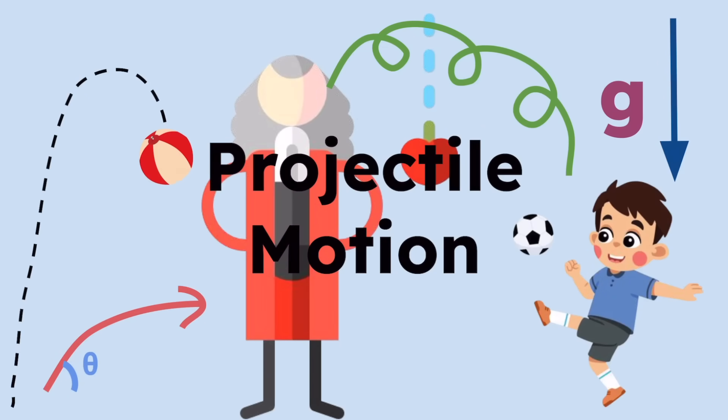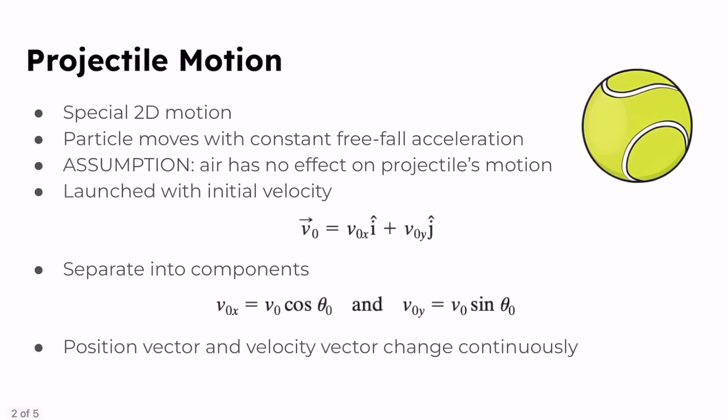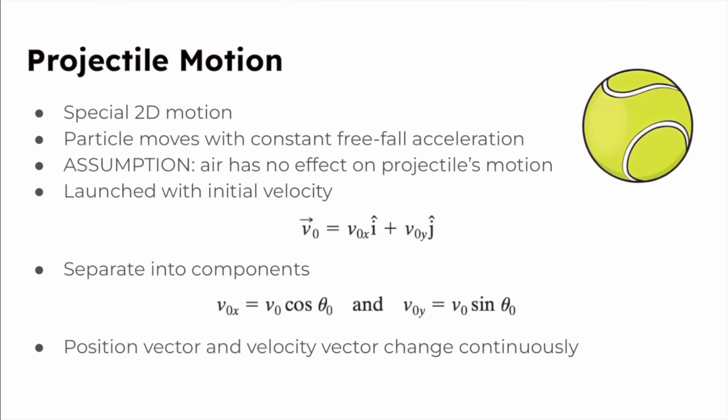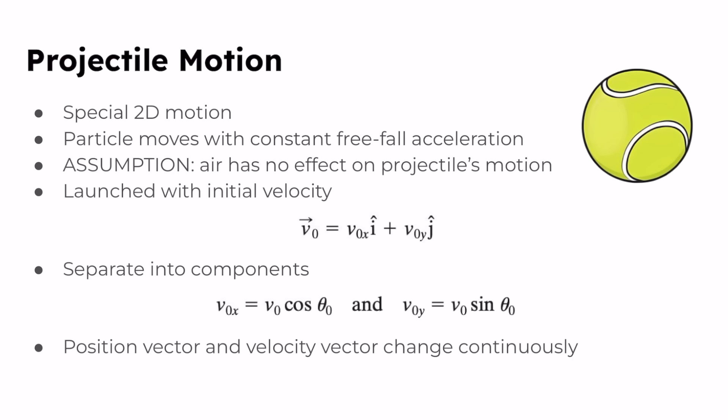Welcome back to our channel. In today's video we will be considering a special case of two-dimensional motion called projectile motion, which deals with how objects move through the air after they're launched or projected. Projectile motion is a special type of two-dimensional motion. A projectile is a particle or particle-like object that is projected or launched, and the particle moves in a vertical plane with some initial velocity vector, but its acceleration is always the free-fall acceleration g, which is downward.